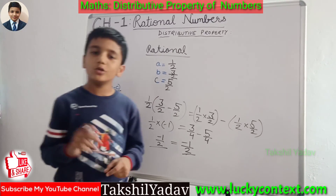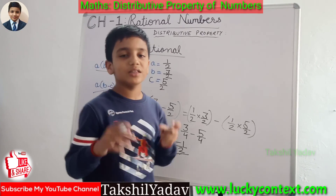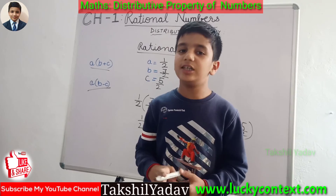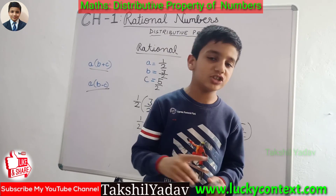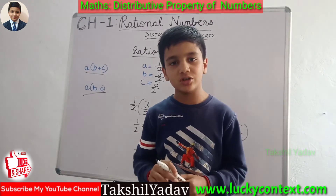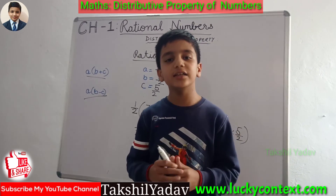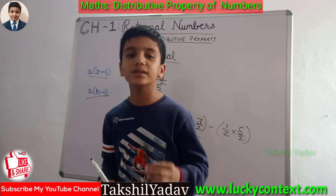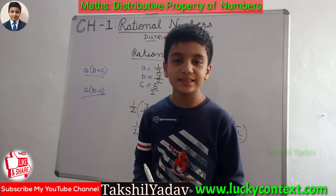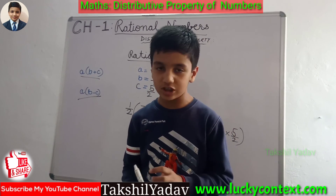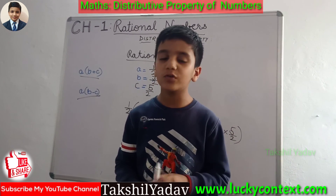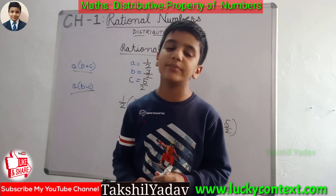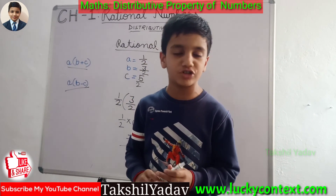So friends, in this video we discussed the property of distributivity in multiplication over addition and subtraction for the different types of numbers: whole numbers, natural numbers, integers, and rational numbers. Thank you friends for watching this video. If you like this video, please subscribe to my YouTube channel.